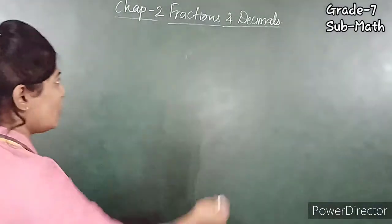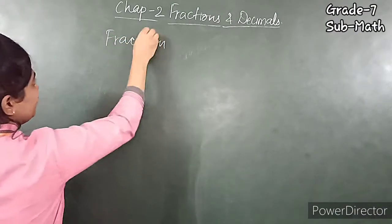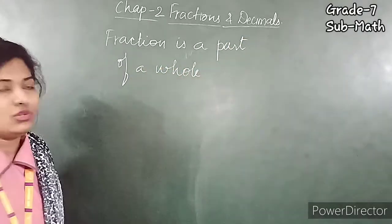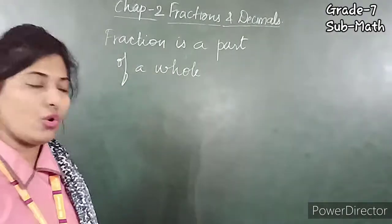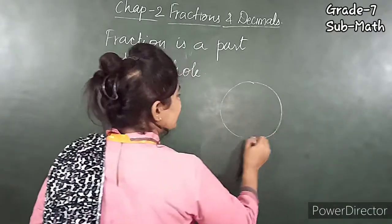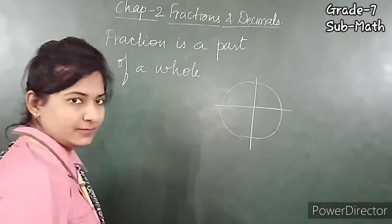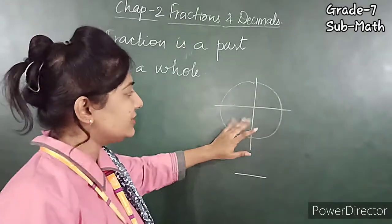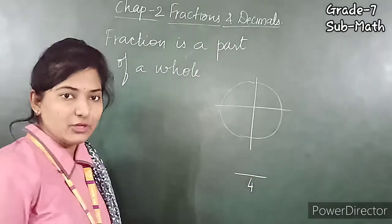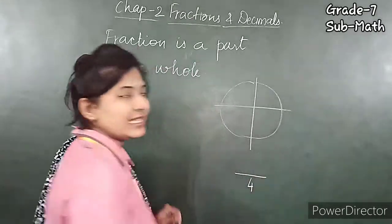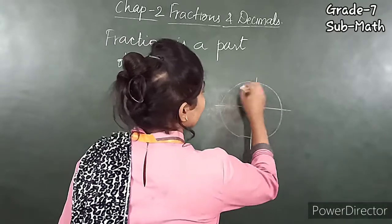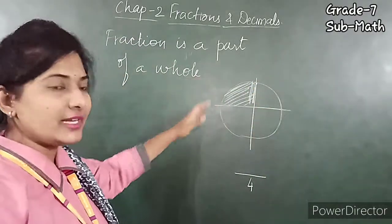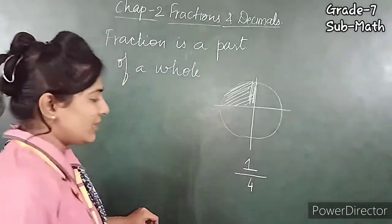First of all, what is a Fraction? A Fraction is a part of a whole. Here, this is one circle divided into four equal parts. We write four in the denominator, and upward is the numerator. If I shade one portion and want to write the fraction of the shaded portion, the answer is one upon four, that is 1/4.